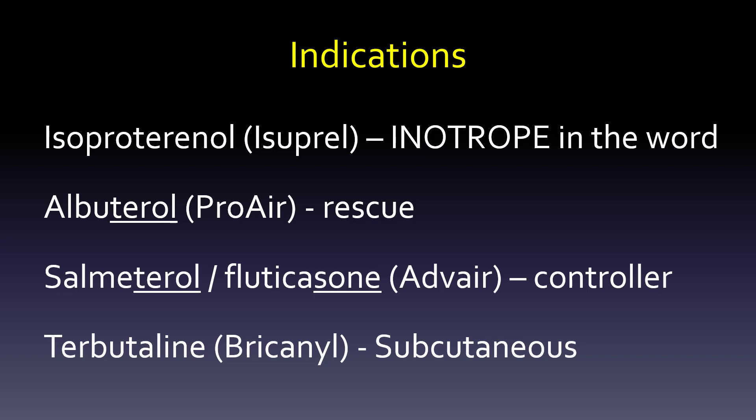Salmeterol — the word 'meter' is in there because it's a metered dose inhaler — also ends in -T-E-R-O-L. There's a problem where albuterol and salmeterol do the same thing but are different: albuterol is short-acting, salmeterol is long-acting. Salmeterol usually has to be added to fluticasone — a study showed salmeterol alone was no bueno. Fluticasone has the -sone ending for a steroid, and together they make Advair, the controller inhaler taken every day, sometimes twice a day. Terbutaline is subcutaneous and even shorter-acting than albuterol.